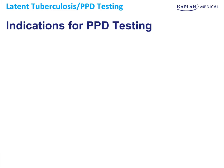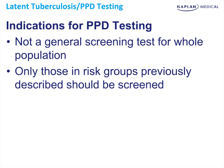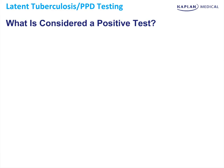One commonly tested point on Step 2 is the correct use of the PPD. Indications for using a PPD test: it is not a general screening test for the entire population — it's only used in risk groups previously described who need to be screened. The PPD test is not useful in those who are symptomatic or in those with abnormal chest x-rays. Again, it's a screening test, not a diagnostic test.